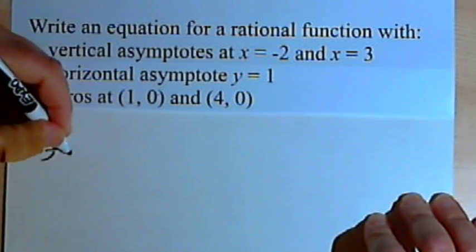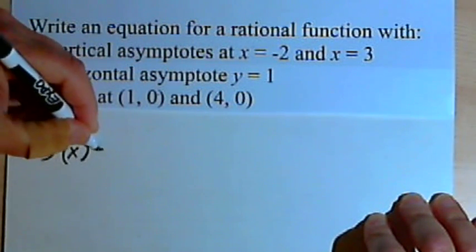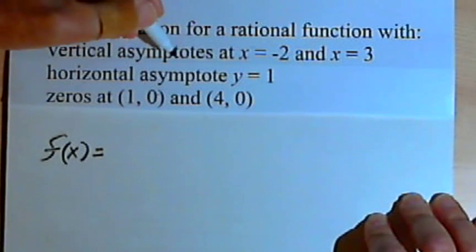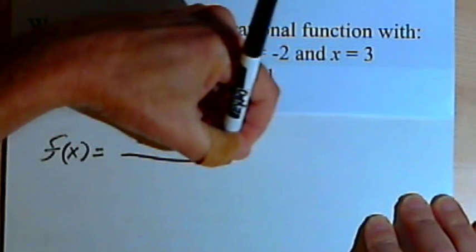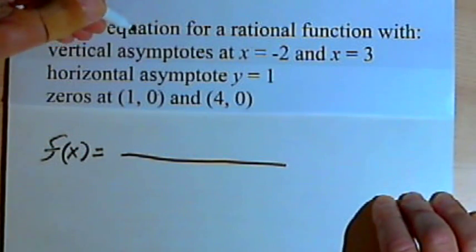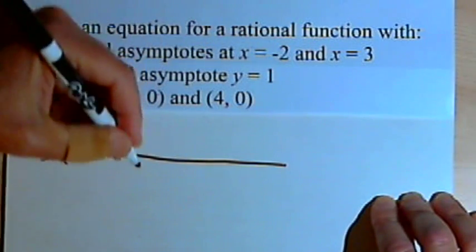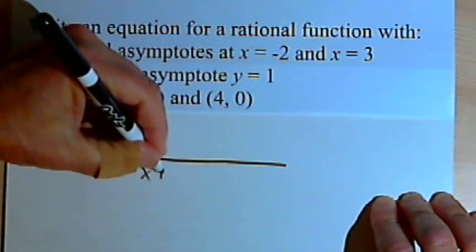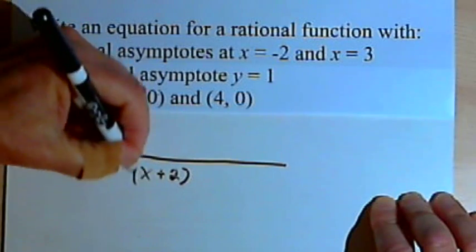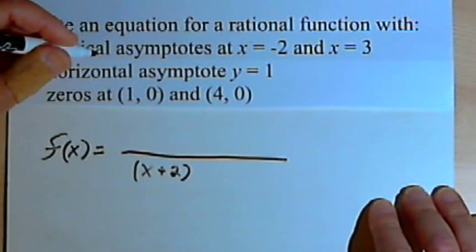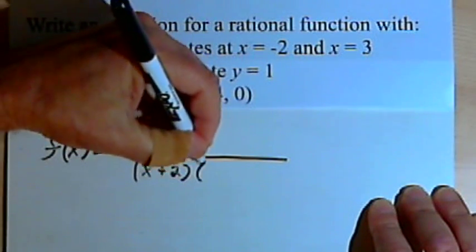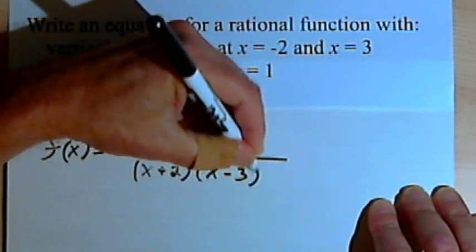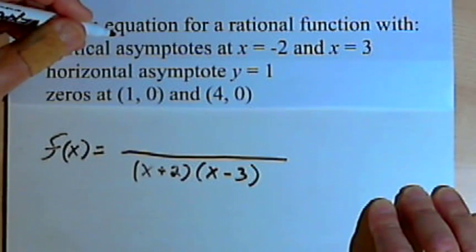Let's call this function f. I'm going to start by using the vertical asymptotes to find the factors of the denominator. I've got a vertical asymptote at x equals negative 2, which means x plus 2 will be a factor of the denominator. And I've got a vertical asymptote at x equals 3, so x minus 3 will be a factor of the denominator.